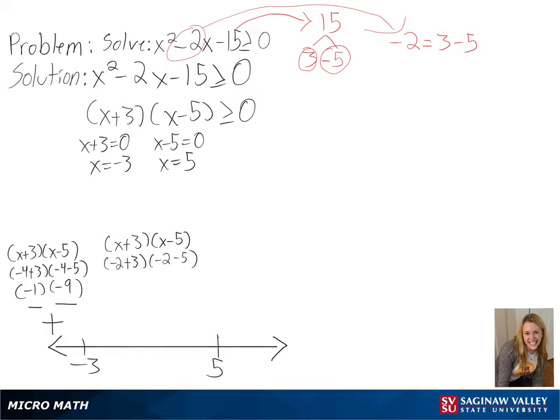We can then use negative 2 in between our numbers, and we get a positive times a negative, or a negative number.